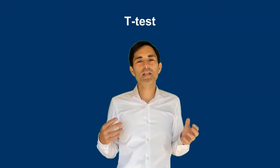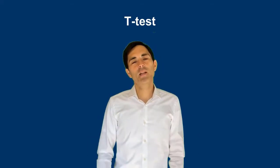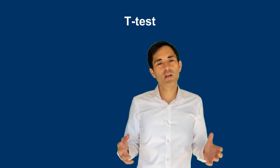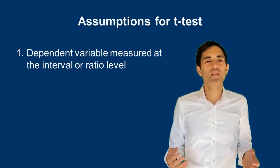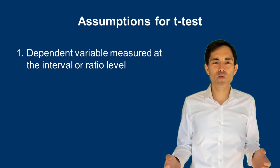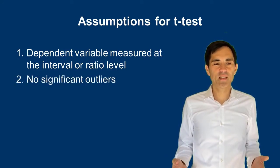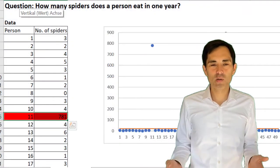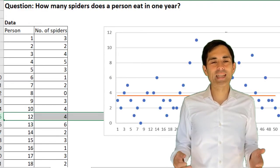There are certain assumptions for t-tests. Only if these assumptions are met can we trust the results of our statistical analysis. The first assumption is that the dependent variable should be measured at the interval or ratio level, as it involves the mean value. Second, there should be no significant outliers — how to detect them and what to do is covered in my video on data cleaning and preparation.